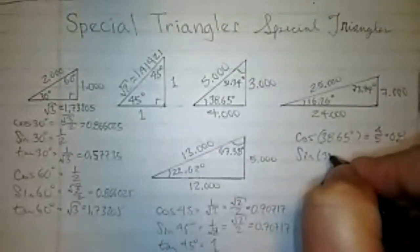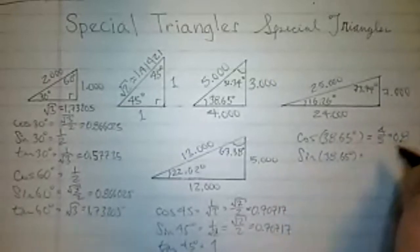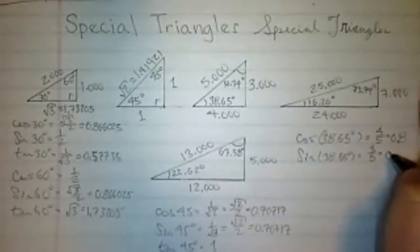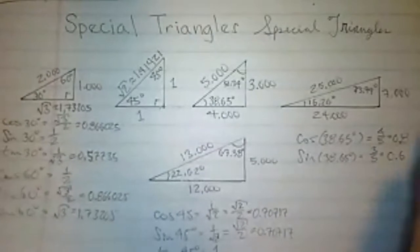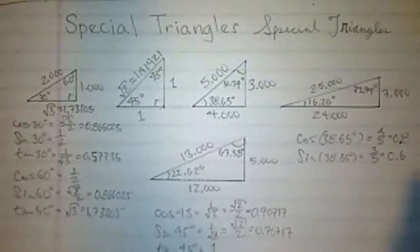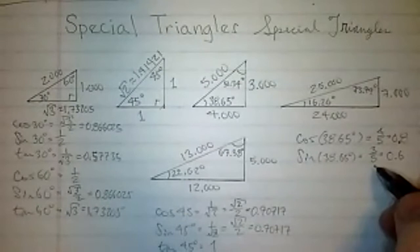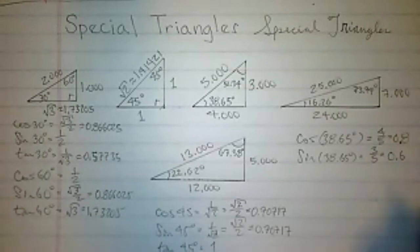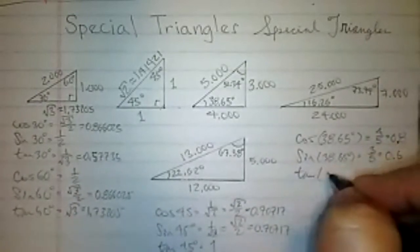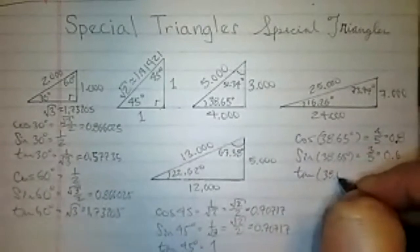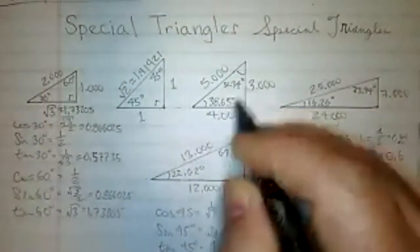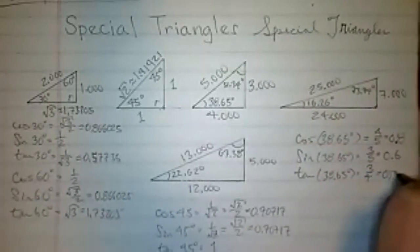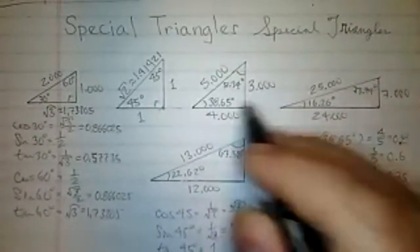The sine of 38.65 degrees is, of course, opposite over hypotenuse. That's three fifths. Again, you should know these fractions. So this is 0.6. Remember, each fifth is 0.2 or 20%. So one fifth is 0.2. Two fifths is 0.4. Three fifths is 0.6. Four fifths is 0.8. So on and so forth. And if you want to know the tangent of 38.65 degrees, that is opposite over adjacent. So that's three fourths. And of course, that's 0.75. Again, these aren't special angles. But like I said, we use these special triangles in physics and especially so in engineering.